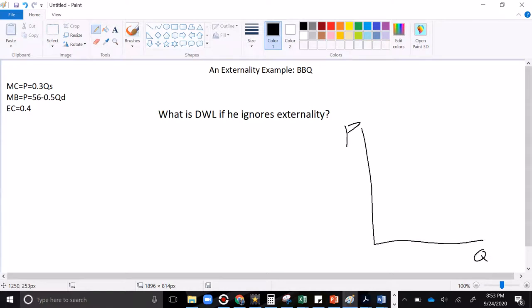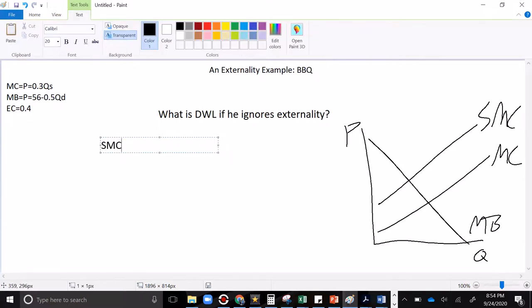So here's how I approach it. I draw first—it helps me with my graph and with my math. I know there's this marginal benefits curve and there's this marginal cost curve. And I know there's this social marginal cost curve, which is equal to marginal cost plus the external cost. The gap between those two curves is the external cost.